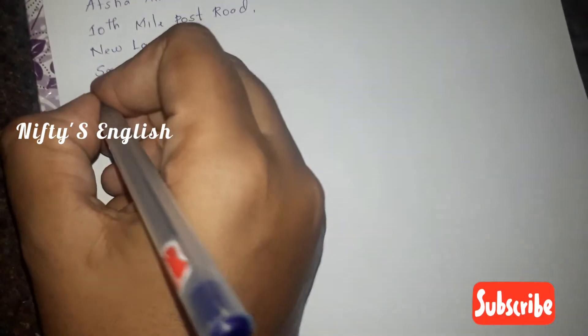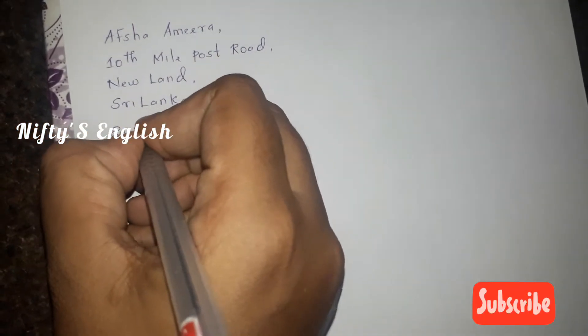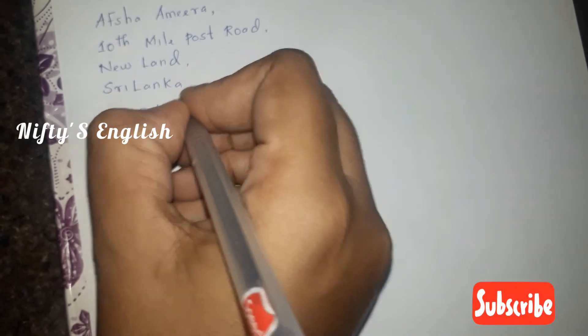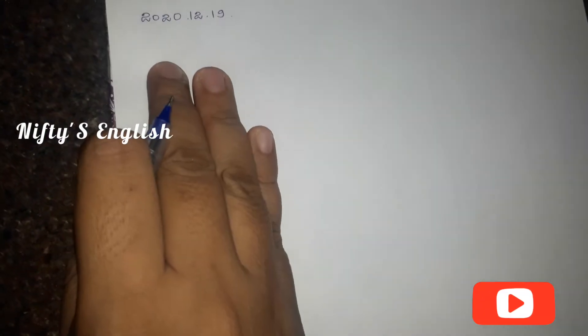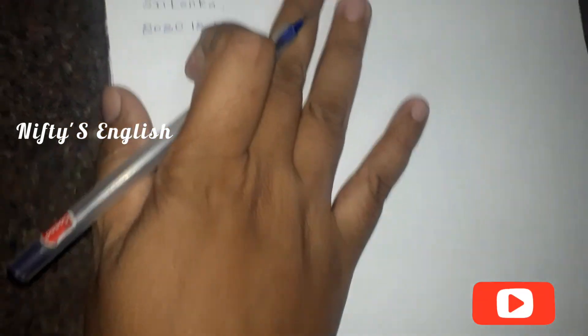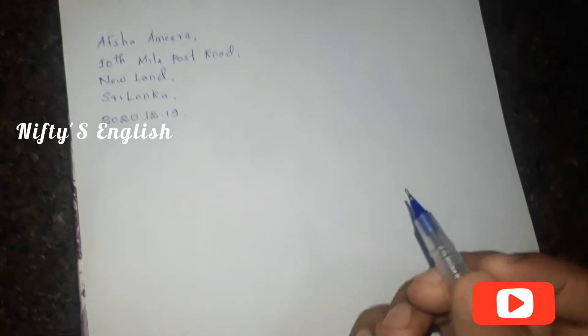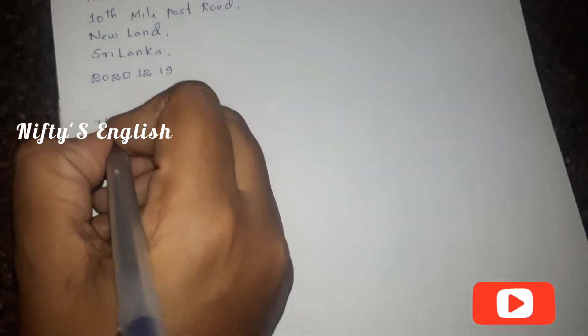The second important thing is the date — it must be in the formal letter. I put today's date: 2020/12/19. Third one is the receiver's address. I would like to write a letter to our college principal, so I put the address of the principal.